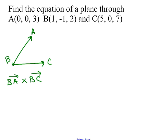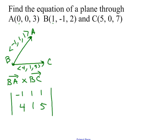The displacement vector from B to A: going from 1 to 0 is negative one in the i direction, from negative one to zero is positive one in the j direction, and from two to three is negative one — wait, that's positive one. So vector BA is ⟨−1, 1, 1⟩. Then vector BC: from one to five is four units, from negative one to zero is positive one, and from two to seven is five units. So that's ⟨4, 1, 5⟩.